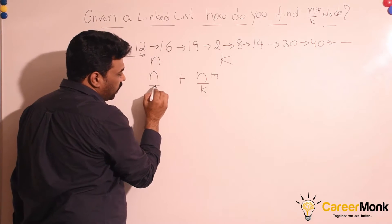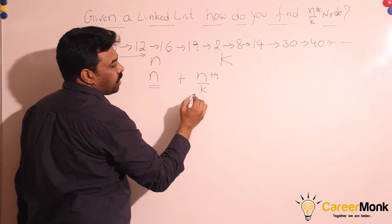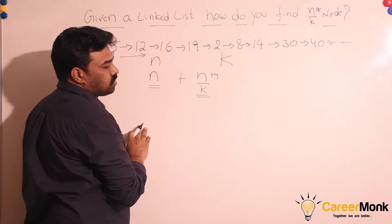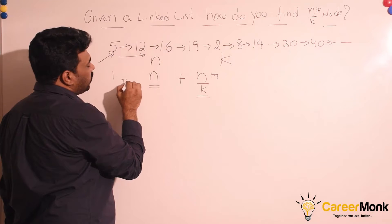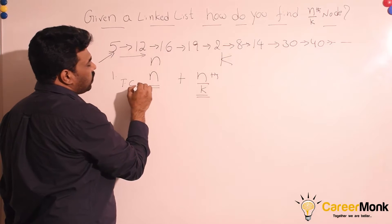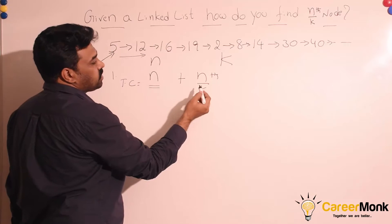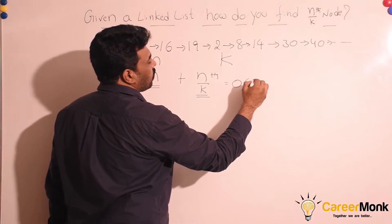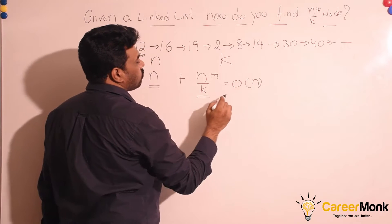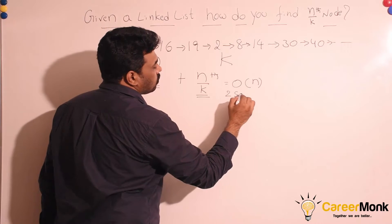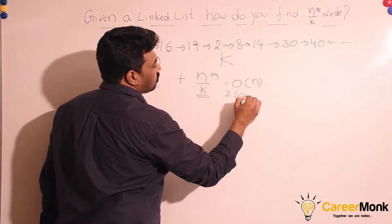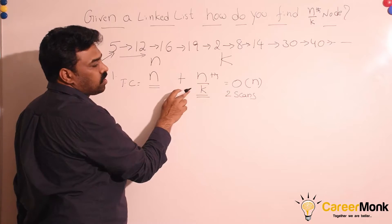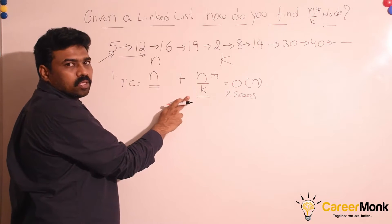The first traversal is for finding the length of the linked list and the second is for finding the n/kth node. So the overall running time of this algorithm is n plus n/k, which is nothing but O(n), but with two scans. In the first scan we find the length of the linked list and in the second scan we go to the n/kth node.